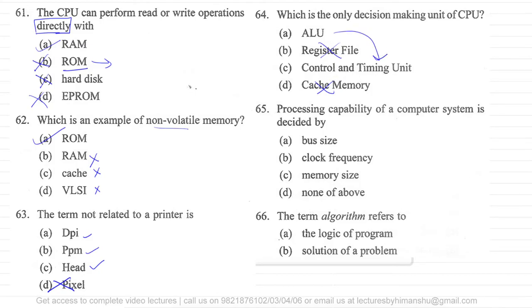Question number 65: processing capability of a computer is decided by. The processing capability is generally dependent on your CPU and CPU architecture. Clock frequency, yes, somewhat we can decide processing capability, but that also depends on CPU architecture. Memory size, again, maybe. Bus size may not be. This is a pretty confusing question because I cannot say processing capability because there are different factors on which the processing capability of a computer is dependent on.